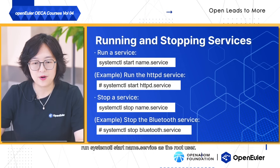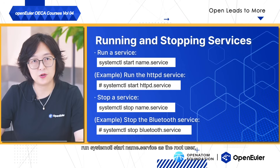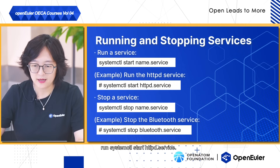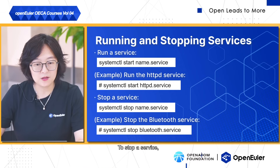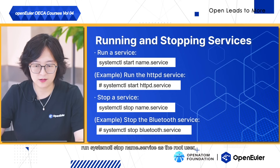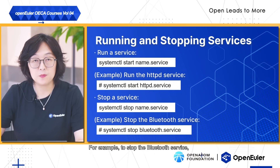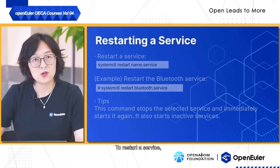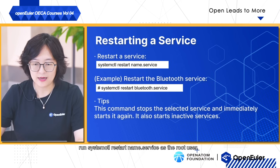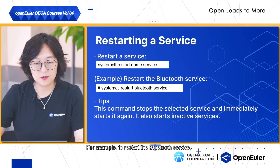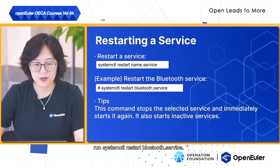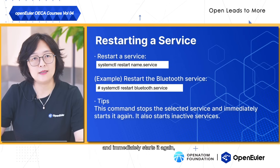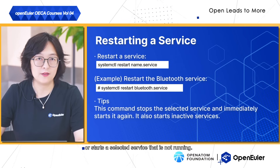To run a service, execute systemctl start name.service as the root user — for example, systemctl start httpd.service. To stop a service, run systemctl stop name.service — for example, systemctl stop bluetooth.service. To restart a service, run systemctl restart name.service. This command stops the selected service and immediately starts it again, or starts it if it is not running.